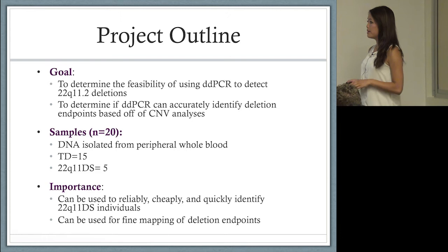We used 20 samples, DNA isolated from whole blood. We blindly screened these samples to see if we could differentiate between 22Q individuals and control individuals. TD represents control or typically developing individuals.